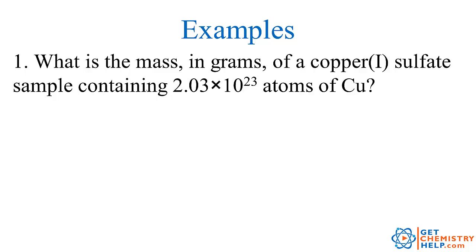Let me work an example problem to demonstrate how we use the mole ratio. The question says: what is the mass in grams of a copper(I) sulfate sample that contains 2.03 times 10 to the 23rd atoms of copper? The first thing to notice is that we have two different substances here — copper(I) sulfate and copper. Whenever you have two different substances, that's where we use the mole ratio.